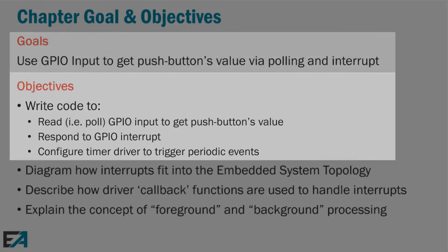The objectives for this chapter are: first, to write code to poll or read the push button's value; second, to respond to an interrupt. We also have another interrupt we're going to use at the end of this chapter in Lab 4C — using a timer to trigger interrupts. We'll use the timer driver, which has callback functions we can use to respond to that timer interrupt.